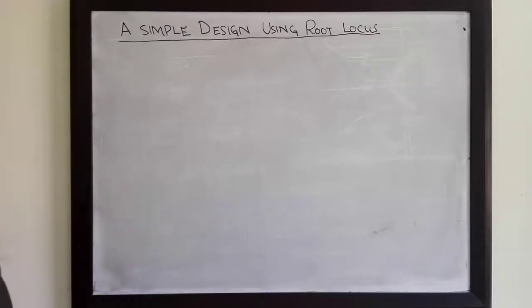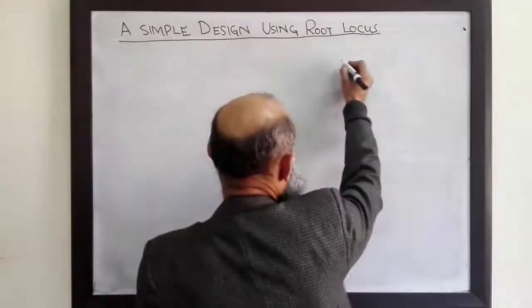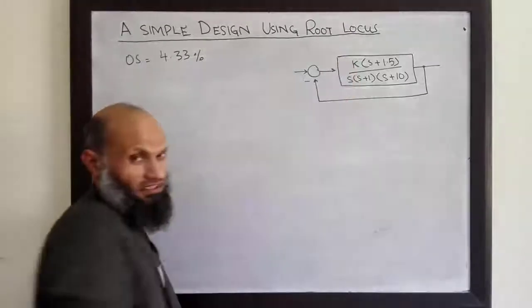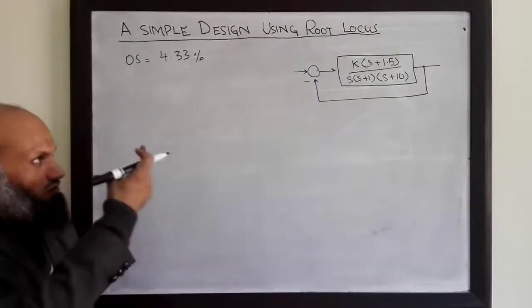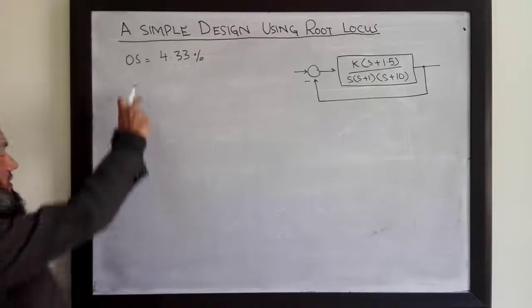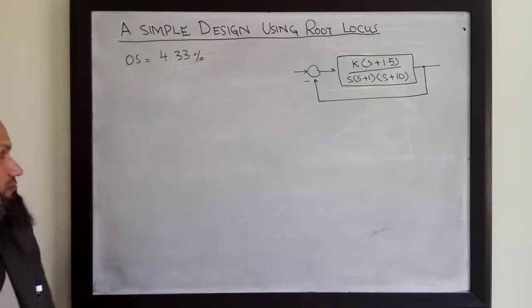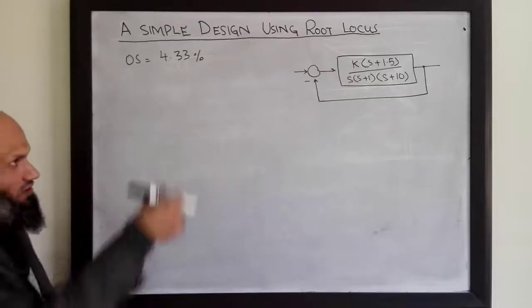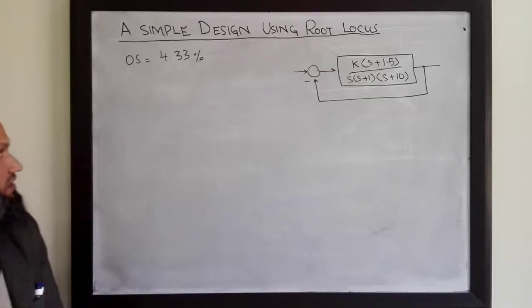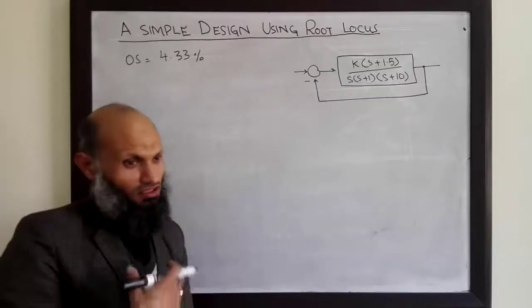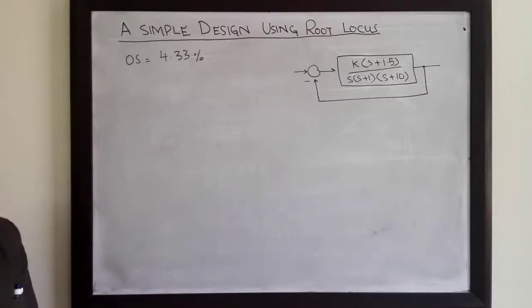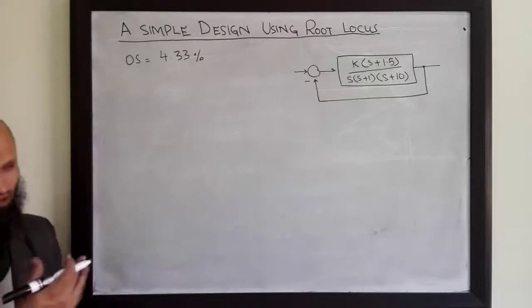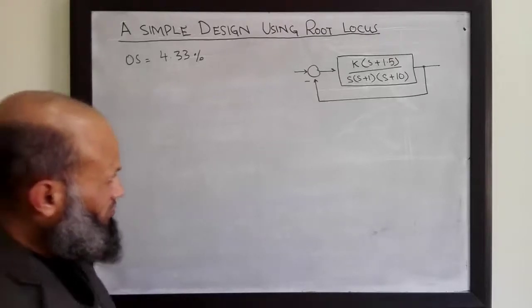We have this system given by this diagram, with negative feedback and K as a tunable parameter. We want to determine that gain such that the closed-loop system exhibits an overshoot of 4.33%. For that purpose, we shall sketch the root locus. In an exam, you will not have access to software tools, so you have to draw the root locus according to scale. Let's draw it.